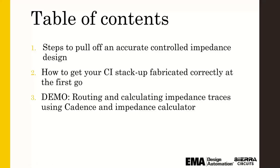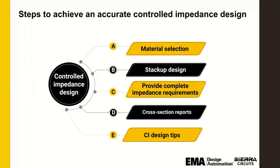So let's get started. Controlled impedance starts always with material selection, so we're going to cover that. We're going to cover a little bit of stack-up design — that's very important. Then how to really provide the complete information to the fabricator, also very important. And then lastly, cross-section reports — knowing that what you've specified in your drawings and what you want from a fabricator was actually met in manufacturing. Then I'll hand it over to Brianna and Matthew to talk more on the practical side in the design tools.